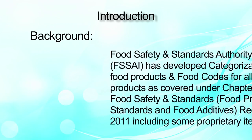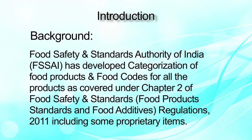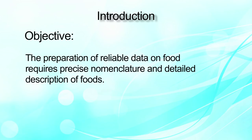I will be continuing with module 2 of the food categorization with respect to the FSSAI regulation, which includes a description of the various food categories. As we have seen in module 1, the Food Safety and Standards Authority of India developed the food categorization to give simplification to the food categories and to identify the product under which category. The basic objective is to get the detail about the requirement of the food product in precise nomenclature form and detailed description of the various foods.